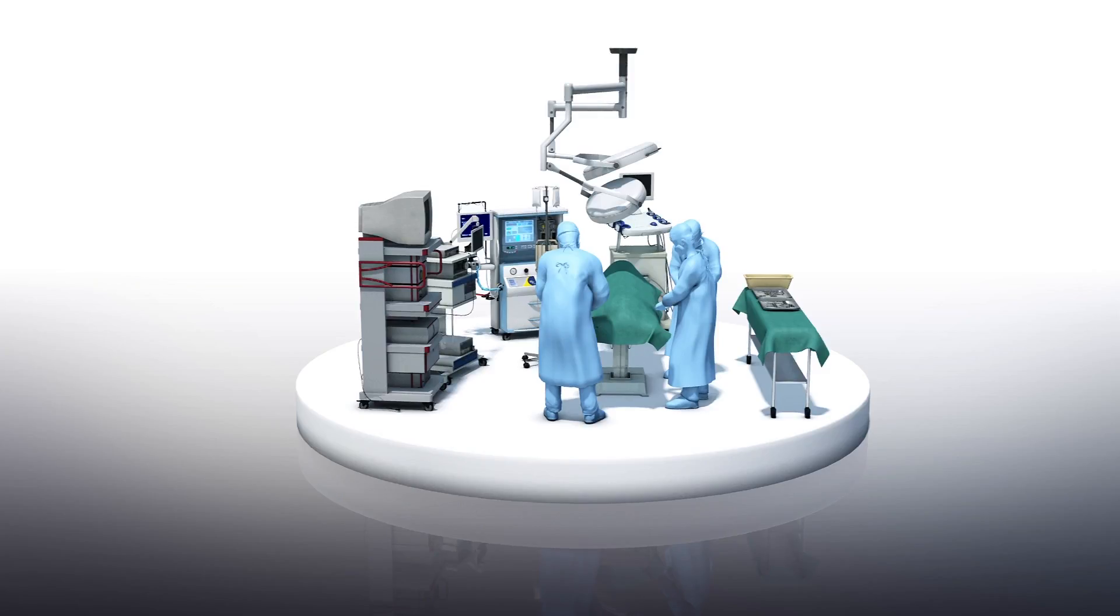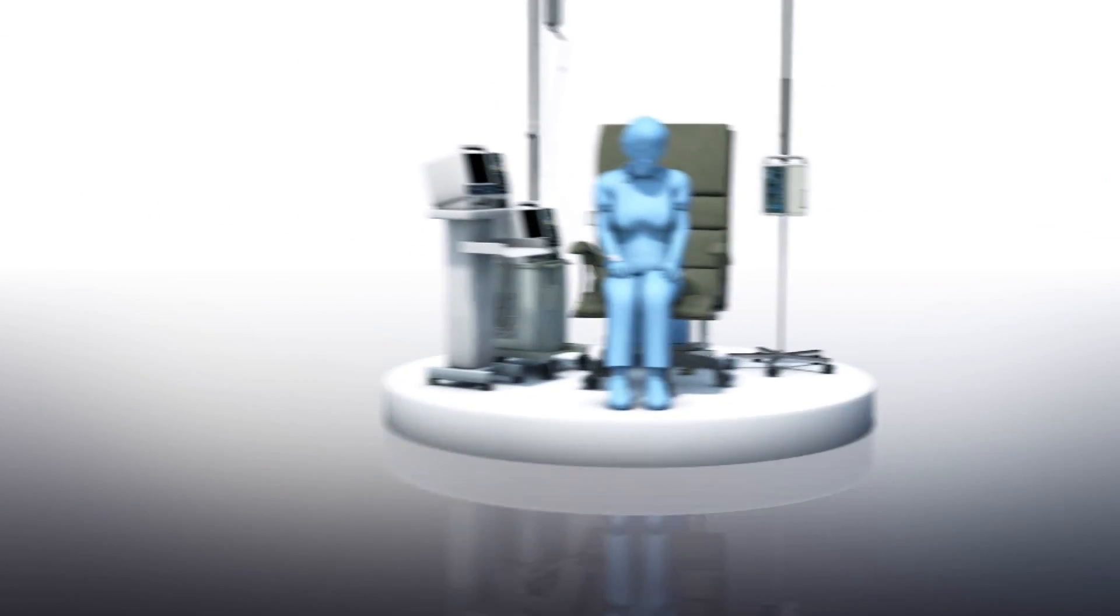Glioblastoma is normally diagnosed through brain imagery and then surgery. Treatment includes surgery to remove as much of the tumor as possible, then radiation and chemotherapy.